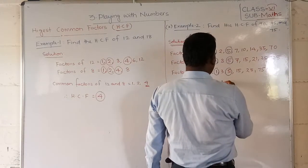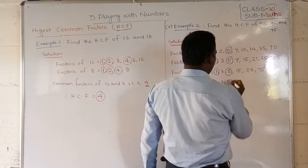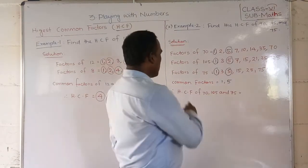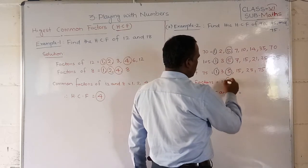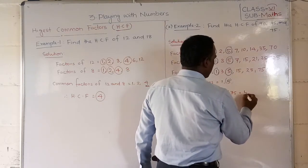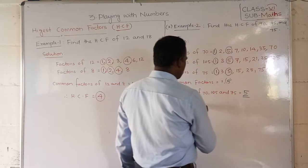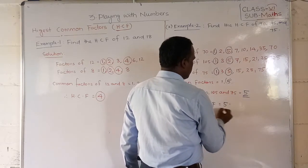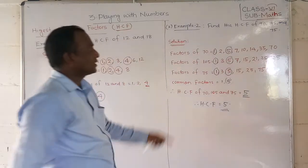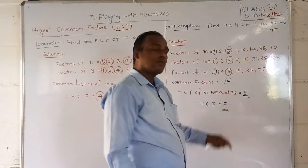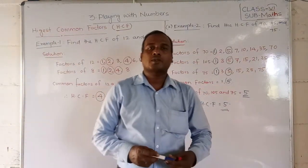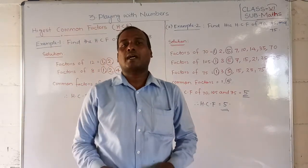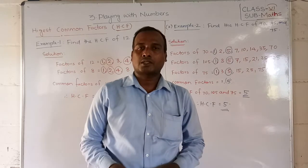So students, what are the common factors? You should observe that 1 is a common factor and 5. Common factors are 1 and 5. So which one is the highest common factor? 5 is the highest common factor. So the answer is 5. Hence HCF is equal to 5. HCF of the 3 numbers is equal to 5. I hope you have understood what is the HCF of 2 or 3 numbers by finding their factors.